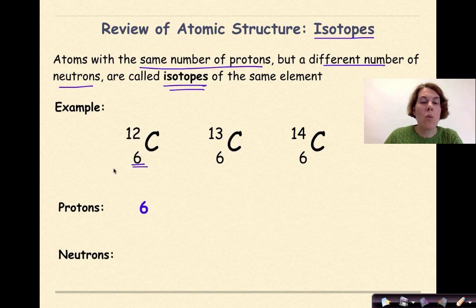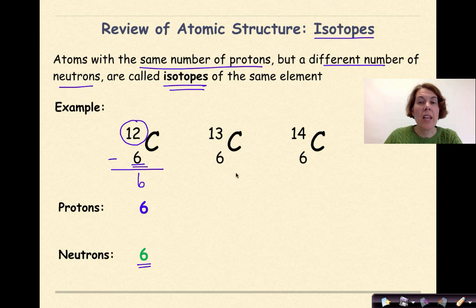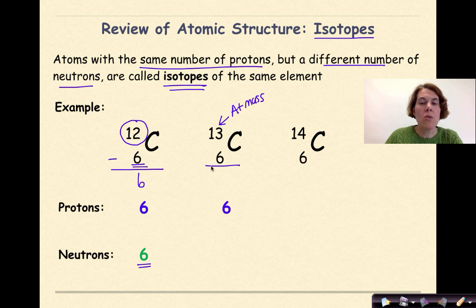But if I look at neutrons, what I need to do here is I need to take my atomic mass and subtract my number of protons, so 12 minus 6 is 6. Therefore, my number of neutrons will be 6. Let's look at the next isotope. Again, I'm dealing with carbon, so my number of protons must be 6. This is my atomic mass up here, which represents my number of protons and neutrons. So if I take the difference between those two, I'm going to get 7. So 7 neutrons in this particular isotope.